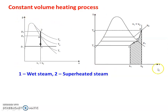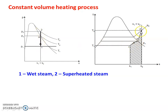In the pressure-volume diagram and temperature-entropy diagram, we use the bell-mouth curve with the saturated liquid line and saturated vapor line. Initially, the steam is wet steam at point 1. With constant volume heating, the quality increases, it becomes dry saturated steam, and then superheated steam. V1 equals V2. The best example for the constant volume heating process is the pressure cooker.